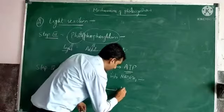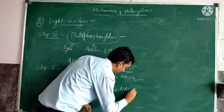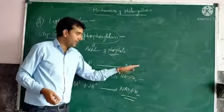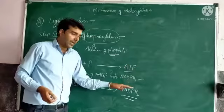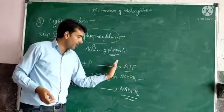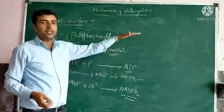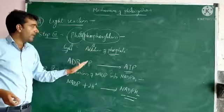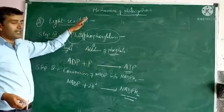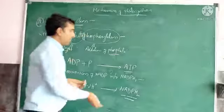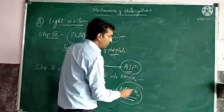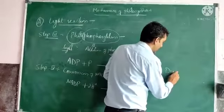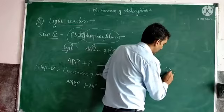Step 4 is the production of NADPH₂. We convert NADP into NADPH₂. ATP and NADPH₂ are the two products of the light reaction, and these products are used in the dark reaction as an energy source. All these processes occur in the presence of light, which is why they are called the light reaction.